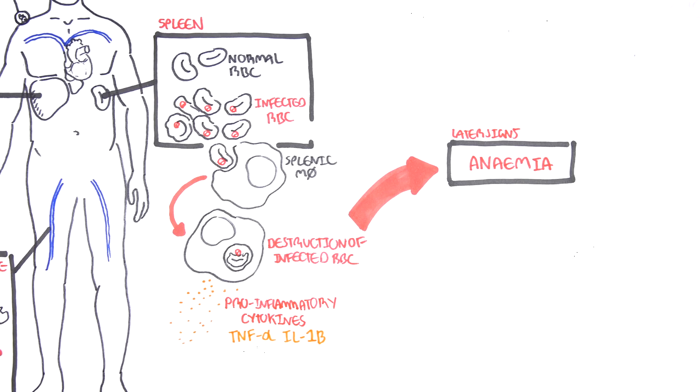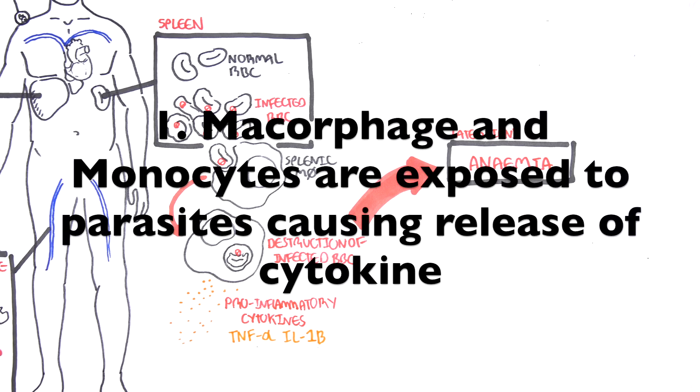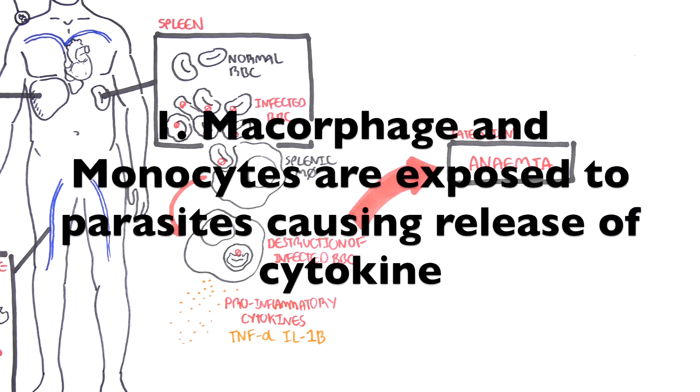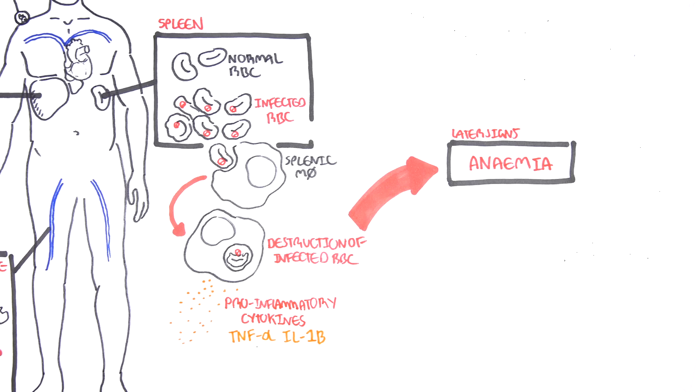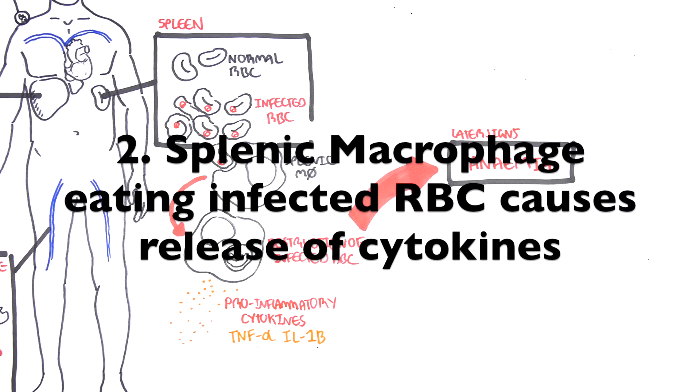So there are two ways that the pro-inflammatory cytokines are released. One, when these macrophages are exposed to the actual parasites in circulation. Or two, when the macrophages in the spleen just engulf the damaged red blood cells, which then will consequently result in the production and release of pro-inflammatory cytokines.